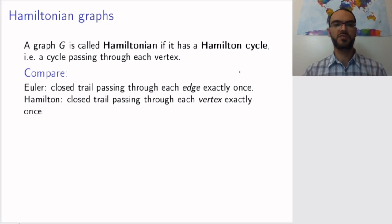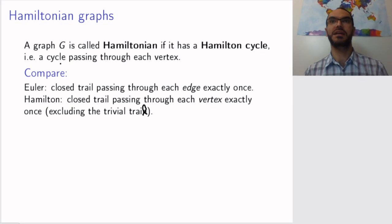To compare this to what it means to be Eulerian, for an Eulerian graph we required a closed trail passing through each edge exactly once. Now we require a closed trail passing through each vertex exactly once. The only thing we exclude is the trivial trail. A cycle has to contain at least one edge, so the trivial walk is not a cycle.